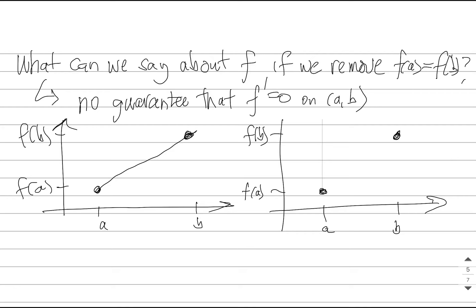Well, certainly there's no guarantee that f prime equals zero. This first picture here does have the function continuous on a closed interval and differentiable on the open interval, but the derivative value is positive everywhere. So there's no guarantee that we're going to have a zero derivative anymore.